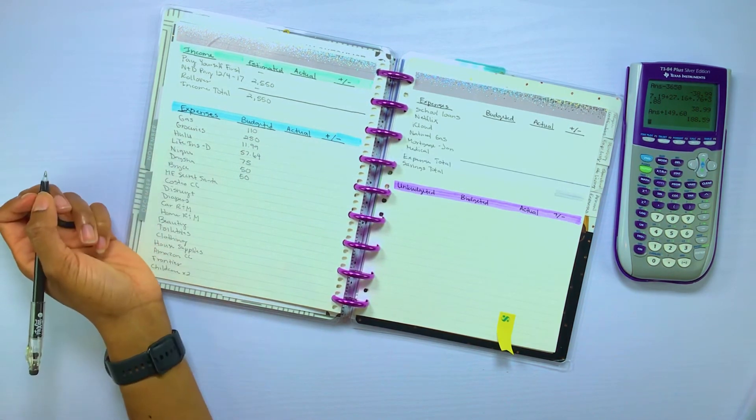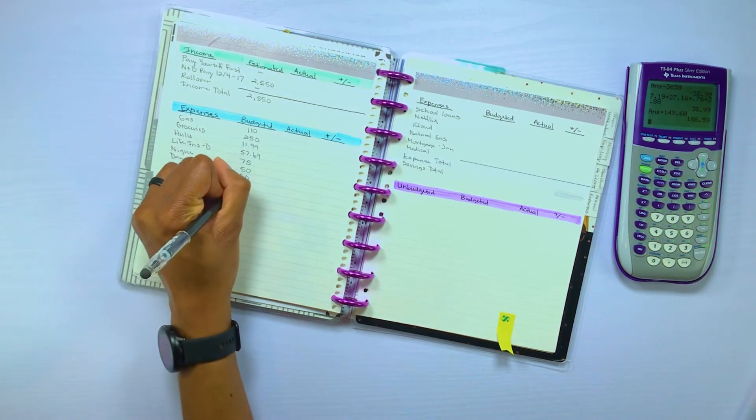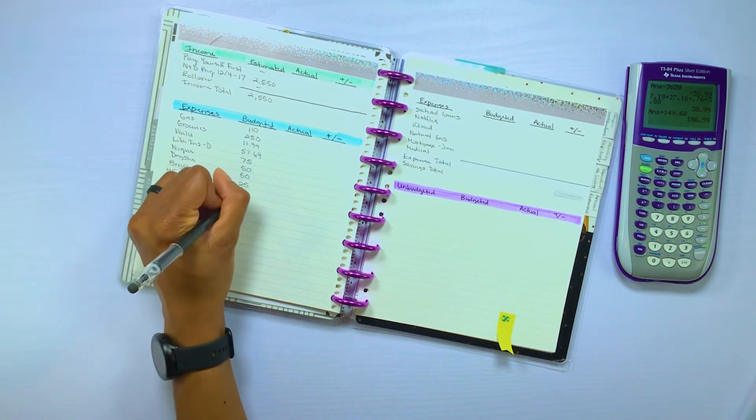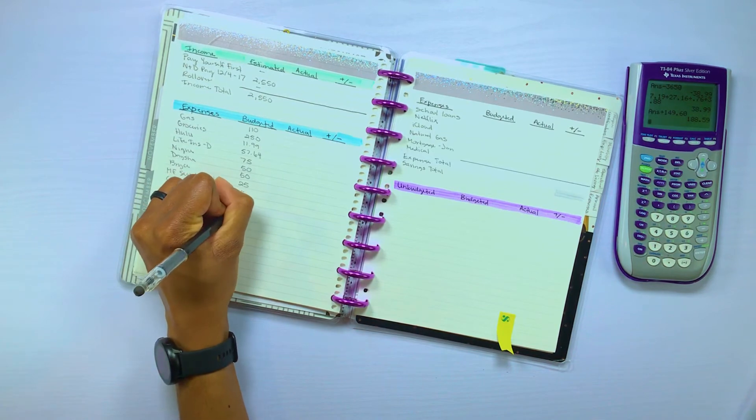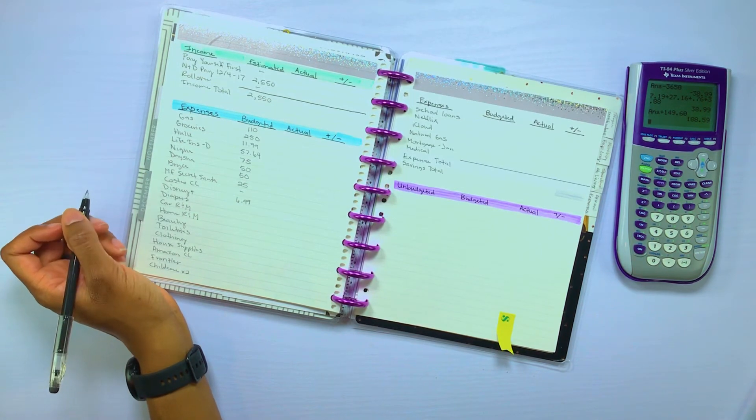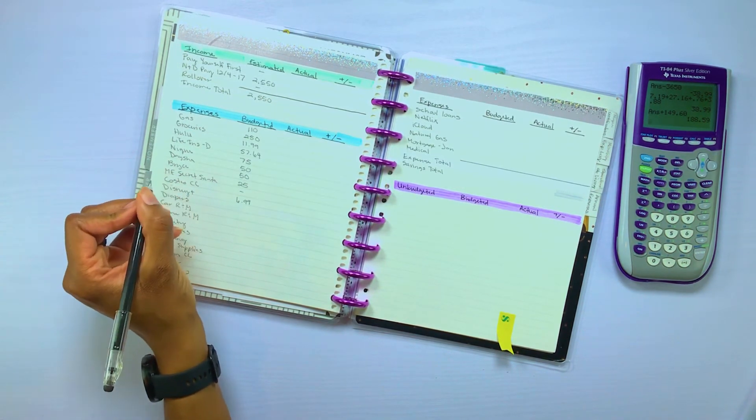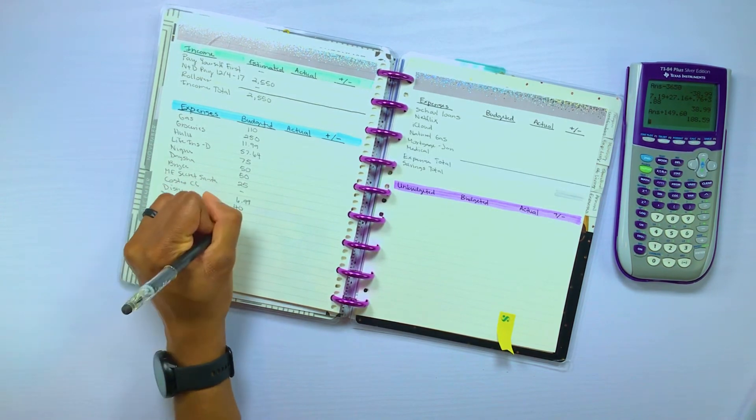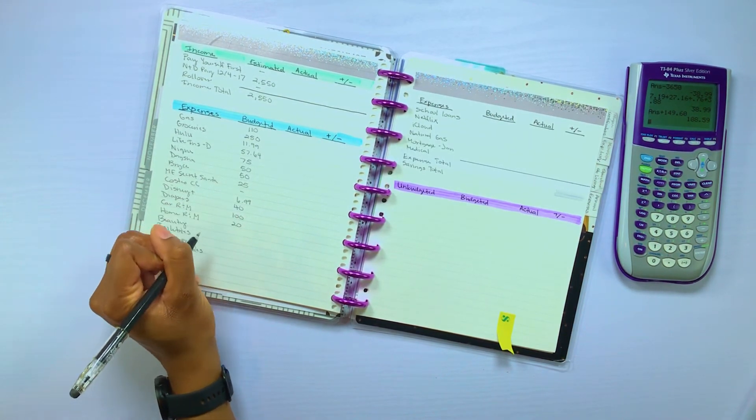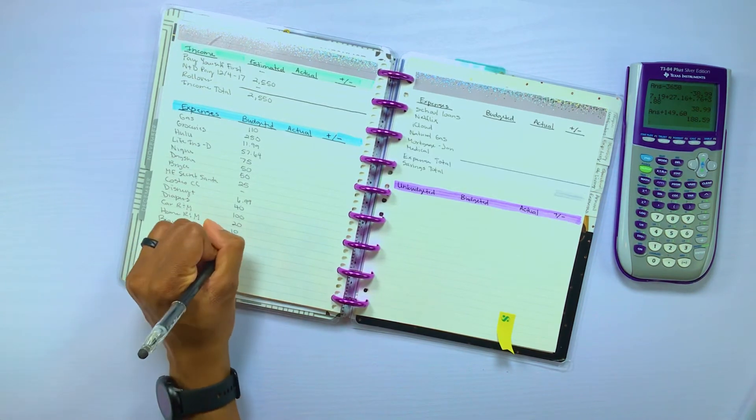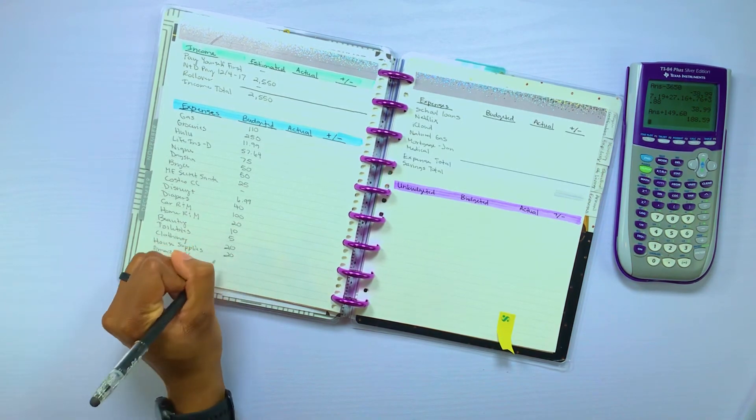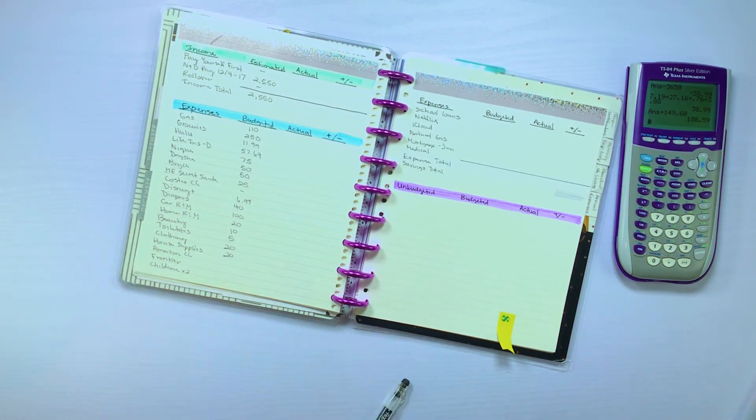We are doing a Secret Santa in the nonprofit that I'm involved in. So that's $25. Costco is a visual reminder. Disney Plus is $6.99, and we'll probably turn off Disney Plus after December. The store is $30. Diapers is $40. Car repair maintenance is $100. Home repair maintenance is $20. Buildings is $10. Toiletries is $5. Clothing is $20. Health supply is $20.